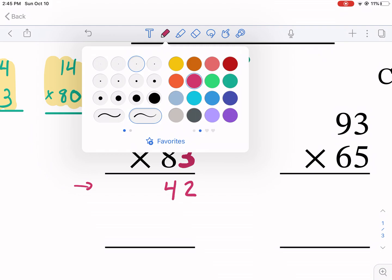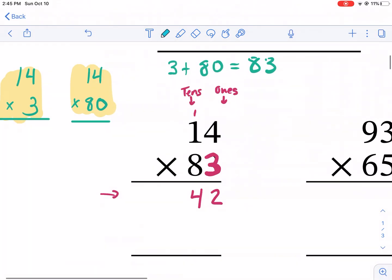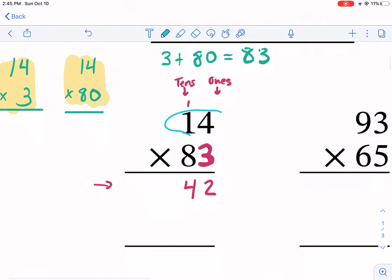Now the second column, this always confuses students. What we're doing is we are doing 14 times 80. A lot of students think we're just doing 14 times eight. That's not the case. This is really 80 there. As you can see, 80 plus three equals 83. So that is an 80, not an eight because eight plus three is just 11.